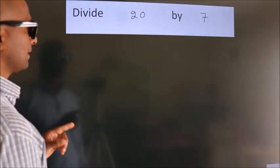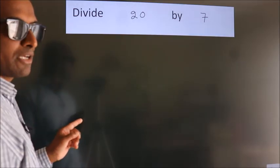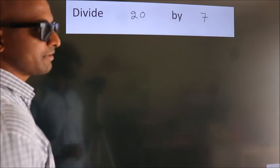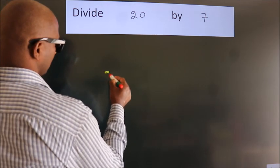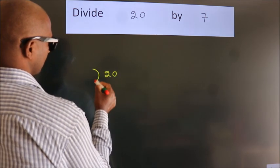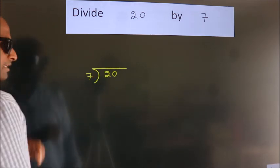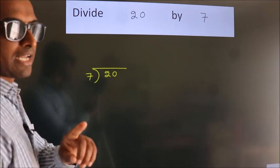Divide 20 by 7. To do this division, we should frame it in this way. 20 here, 7 here. This is your step 1.